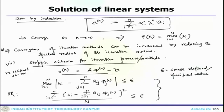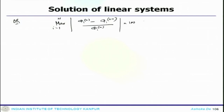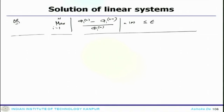Another possible criterion is for the maximum normalized difference between two consecutive iterations to drop below epsilon: max over i of |phi_i^n minus phi_i^(n-1)| divided by phi_i^n, as a percentage, below some epsilon value. Either of these criteria can be used for the convergence limit — these are the key requirements for any iterative process.